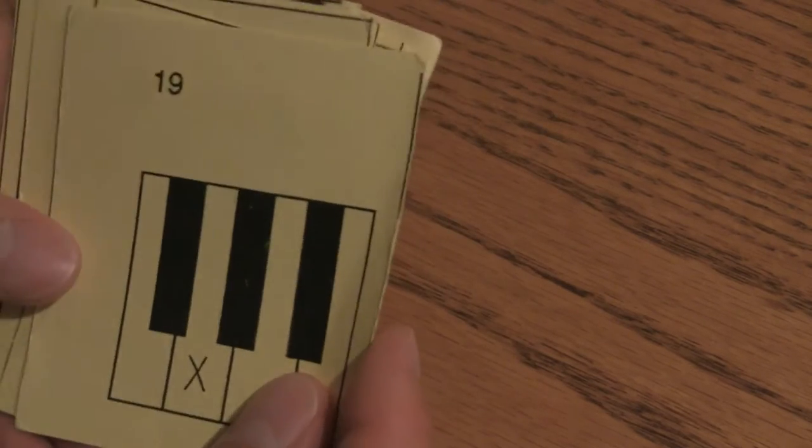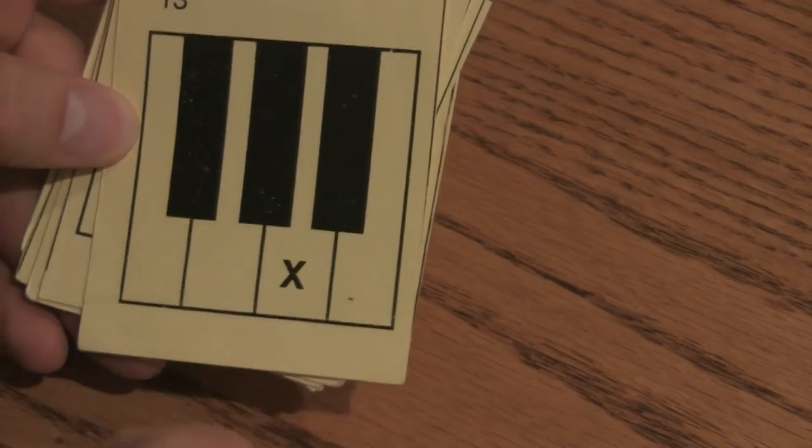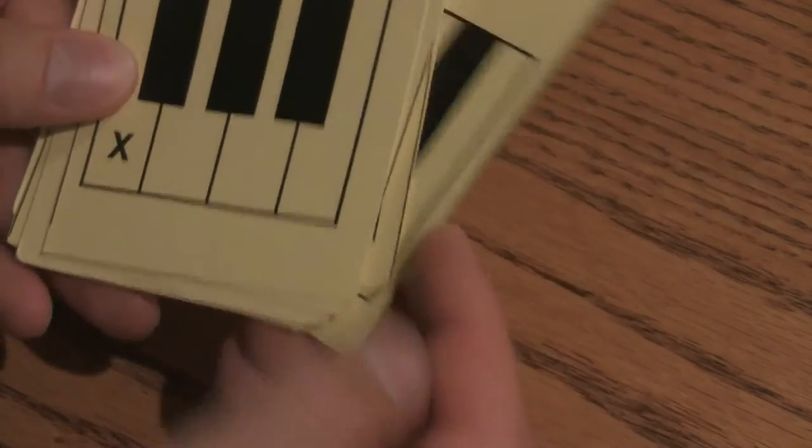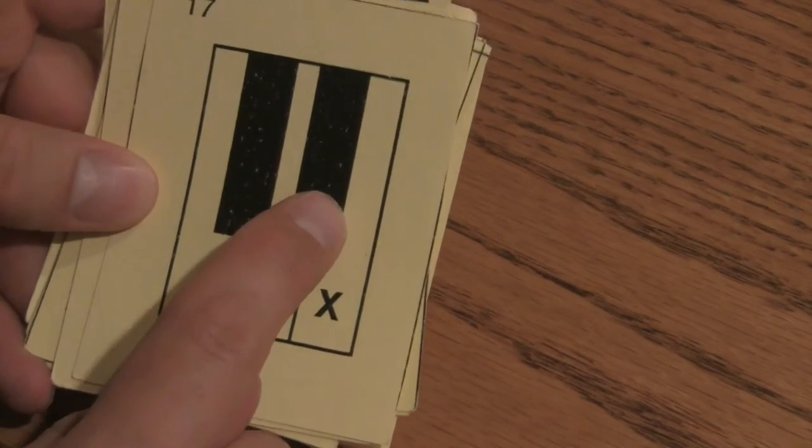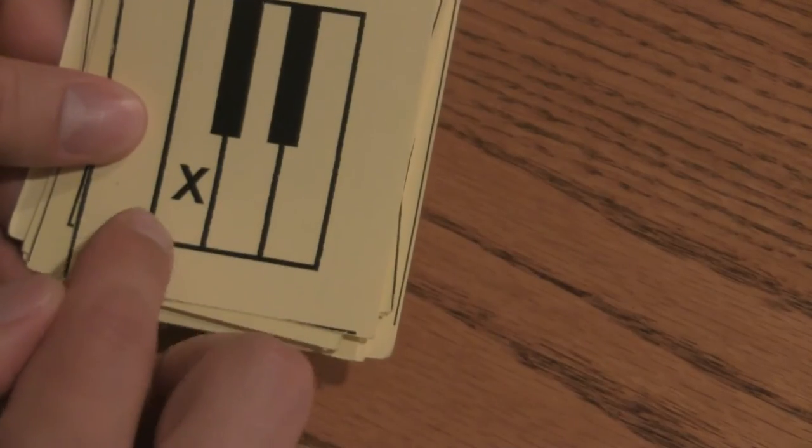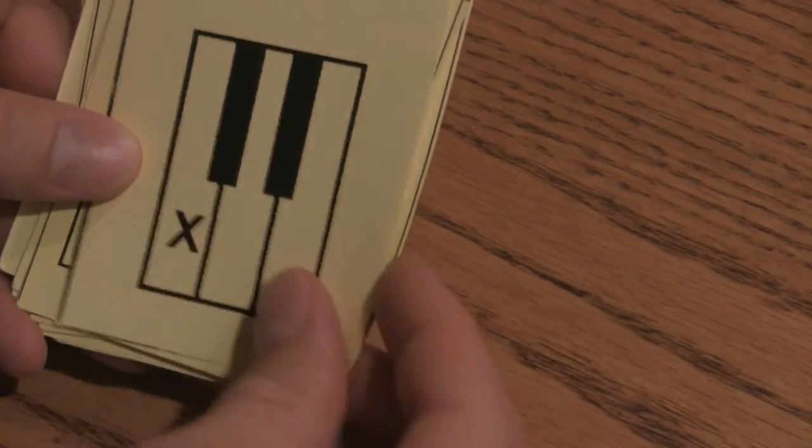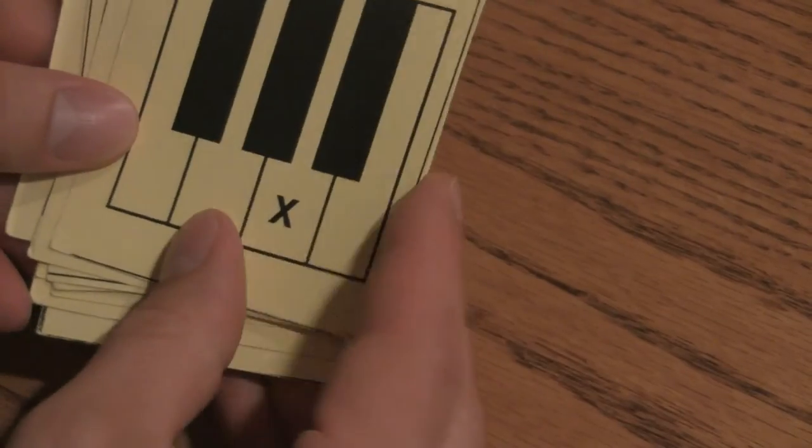Two blacks, C. It might be middle C or might not. Three blacks, A. Three blacks, below F. Two blacks, E. Two blacks, D. C, B. A.